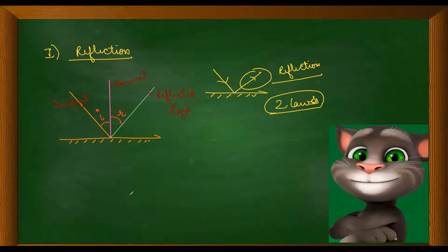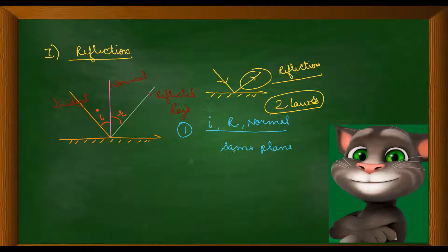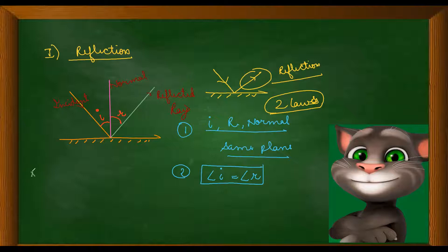The angle which the reflected ray makes with the normal is the angle of reflection. The two laws of reflection state that: the incident ray, reflected ray, and normal all lie in the same plane — this is the first law of reflection. The second law is that the angle of incidence is equal to the angle of reflection. It should be noted that these laws of reflection are applicable to all types of reflecting surfaces, both plane and spherical surfaces.